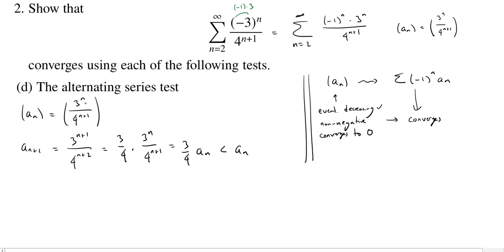Is it non-negative? Well, sure. Everything we see here is positive, right? So there's no problem there. And what about convergence to 0? Well, if we take our 3 to the n over 4 to the n plus 1 and write it as 1 fourth times 3 fourths to the n,